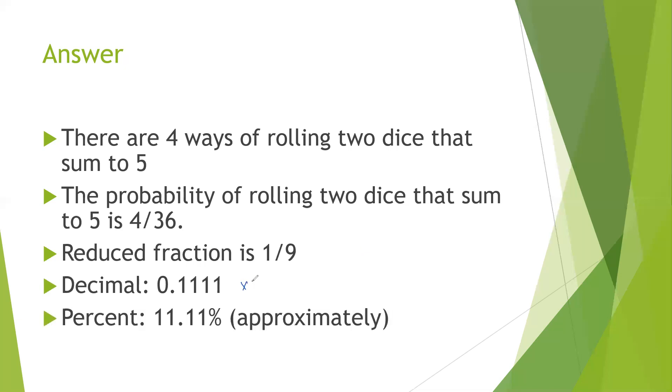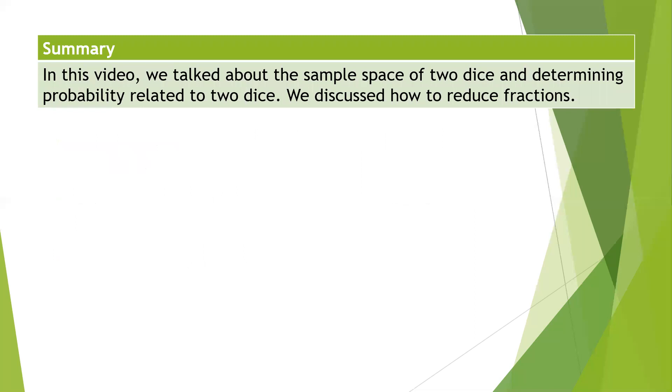So in summary, in this video we talked about the sample space, which is the 36 ways to roll two dice, and the probability related to two dice in terms of finding the sum based on what we roll. We also talked about reducing fractions.